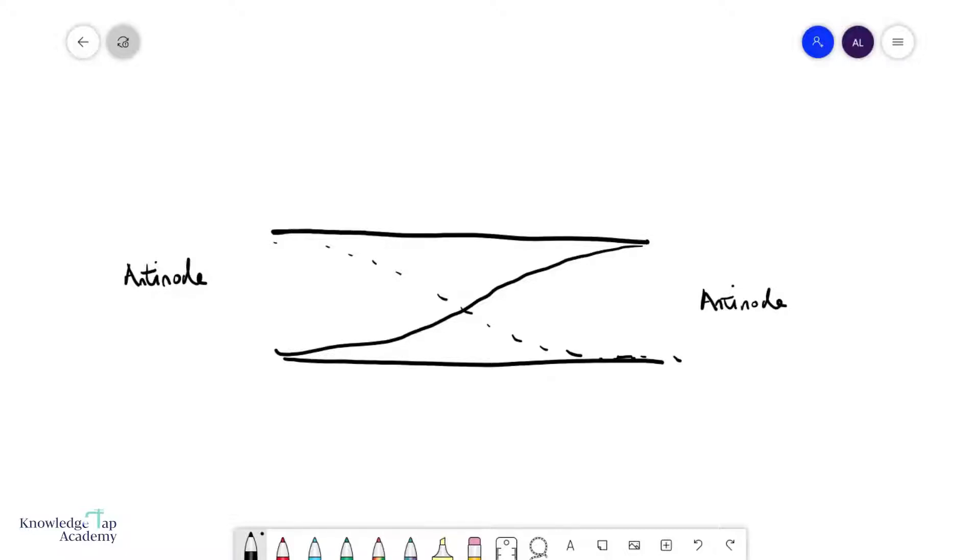We are going to now explore stationary wave formation on a pipe that is open on both ends. So as you can see clearly here, there's an open end here and of course an open end here.